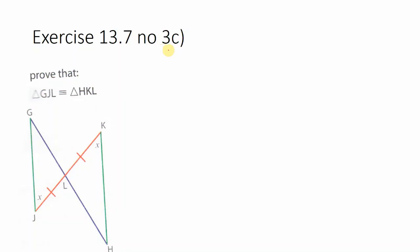So let's look at one problem from number three. We are going to tackle 3c where we have to prove that triangle GJL is congruent to triangle HKL. So first we know we need the introduction. So in triangle GJL.